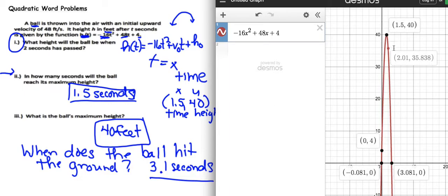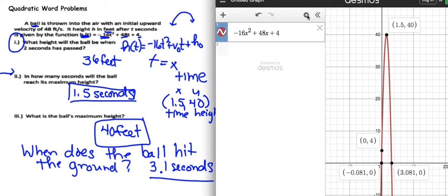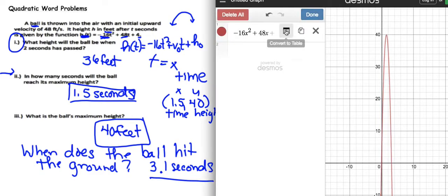So how high is it? How high will the ball be when two seconds have passed? It would be thirty-six feet. Now, there's a better way to do it, and it's to look at the table. And so it's really, really quick if you look at the table.